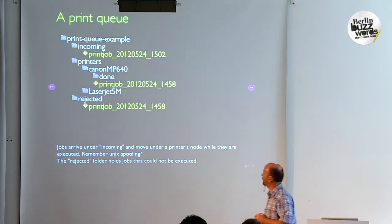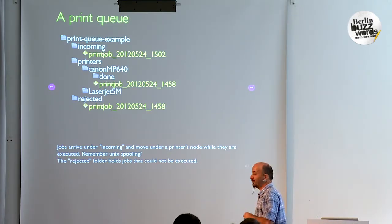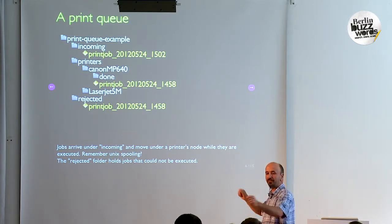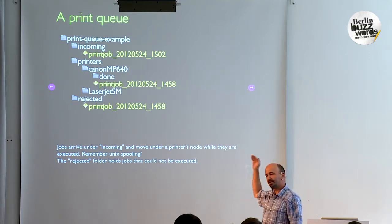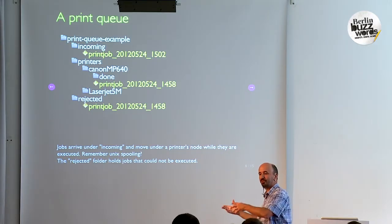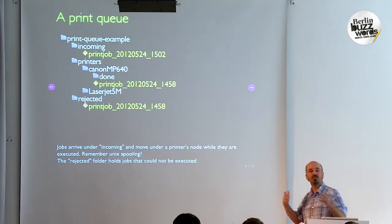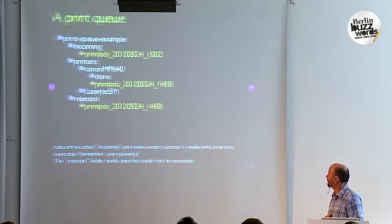A totally different example: a print queue. The guys familiar with Unix file system layout will recognize this. You have just a few folders to handle your print jobs — one folder for incoming jobs, one folder for each printer you're managing. Files move between nodes according to what they're doing. A file comes into incoming, you move it under the printer when it's being printed. The printer has a done folder for finished jobs. It's a very simple, clear, transparent way of managing a printing workflow — probably still how Linux does print spooling, based on file names and an obvious structure.